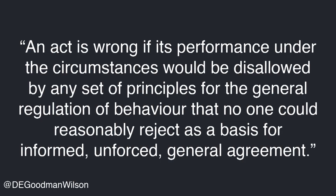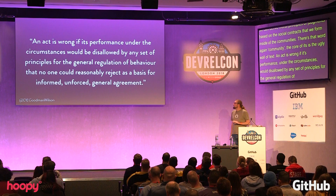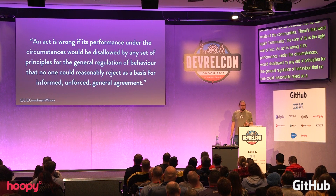Contractualism is based on the idea that we can derive moral principles or moral judgments based on the social contracts that we form inside of communities. And the core of it is this: an act is wrong if its performance under the circumstances would be disallowed by any set of principles for the general regulation of behavior that no one could reasonably reject as a basis for informed, unforced, general agreement. The essence of this is the idea that wrong acts are unjustifiable. If you can't find a justification for it, it's probably not a good idea.